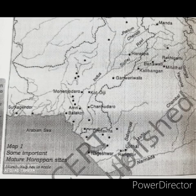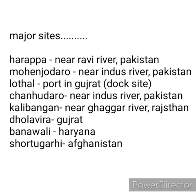On the map, you can see dots — these are the sites of Harappan civilization. Harappan civilization had many major sites, similar to Mesopotamian civilization which had various villages and cities. We should also know where these sites were found — in India or in Pakistan — and what the specialities of each site are.